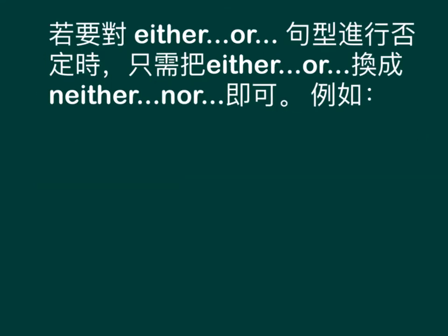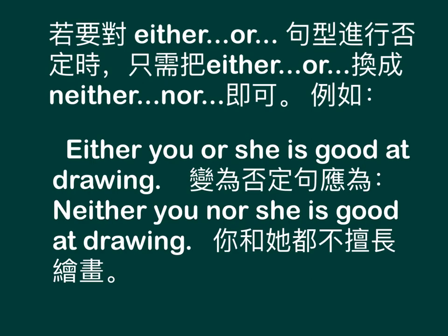To negate an either/or sentence, simply replace either/or with neither/nor. For example: Either you or she is good at drawing → Neither you nor she is good at drawing — 你和她都不擅长绘画 (Neither you nor she is good at drawing).